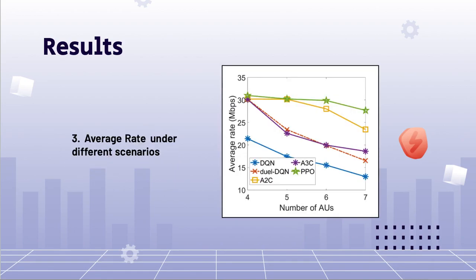From the figure, we can see that PPO has the highest average rate when compared with other algorithms, and as the number of AUs increase, the average rate increases for all algorithms.